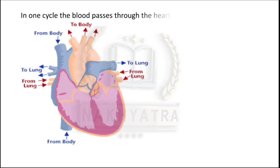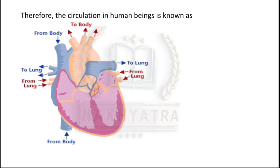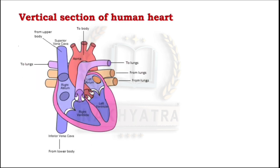In one cycle, the blood passes through the heart twice. Therefore, the circulation in human beings is known as double circulation — it is called double circulation because in one cycle the blood passes through the heart two times.